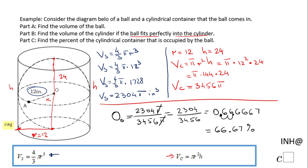66.67% of the space of the cylindrical container is occupied by the ball. Two-thirds of the volume of the cylindrical container is occupied by the ball. If you enjoyed this clip, don't forget to click the like button and come back for more help. Thank you.